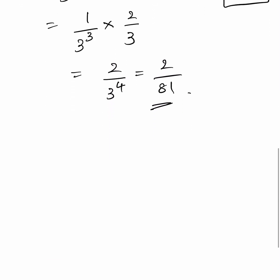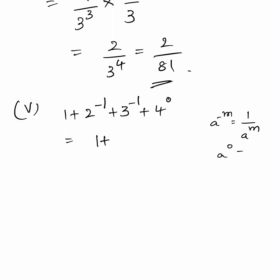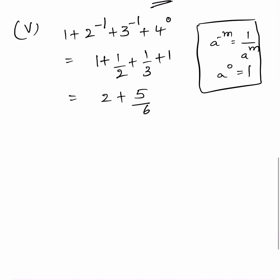Let us move on to the fifth part: 1 plus 2 power minus 1, plus 3 power minus 1, plus 4 power 0. Using a power minus m equals 1 by a power m, and a power 0 equals 1: that is 1 plus 1 by 2 plus 1 by 3 plus 1, that is equal to 2 plus 5 by 6, that is equal to 17 by 6.